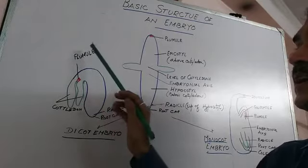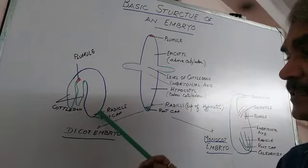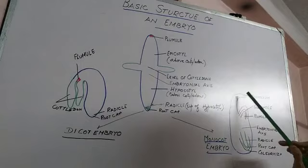Plumule, giving rise to shoot system. Radicle, the root system. Radicle is covered by root cap. In case of monocot embryo,